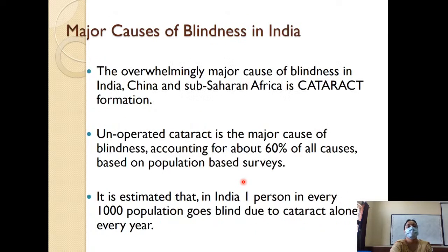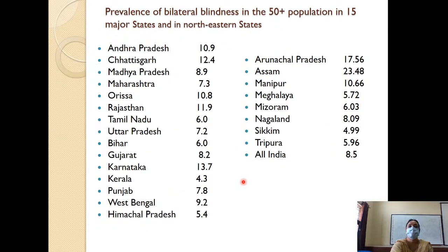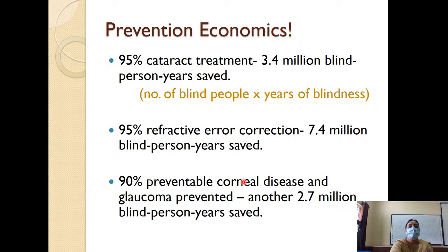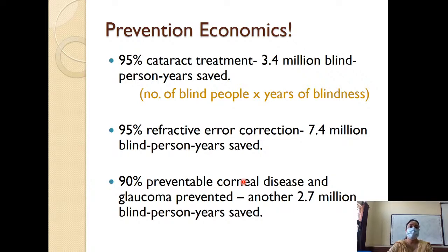Now, why are we talking so much about prevention? 95 percent treatment for cataract saves about 3.4 million blind person-years - that is, number of blind people multiplied by years of blindness. This is why there is so much focus on cataract surgeries. It is a single measure to radically transform the blindness situation in developing countries, and cataract can be completely treated by surgery with intraocular lens implants.